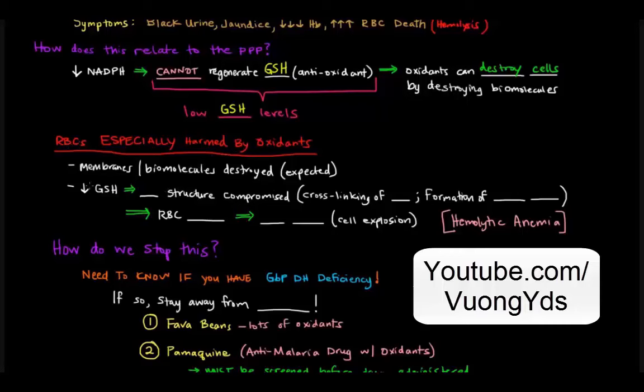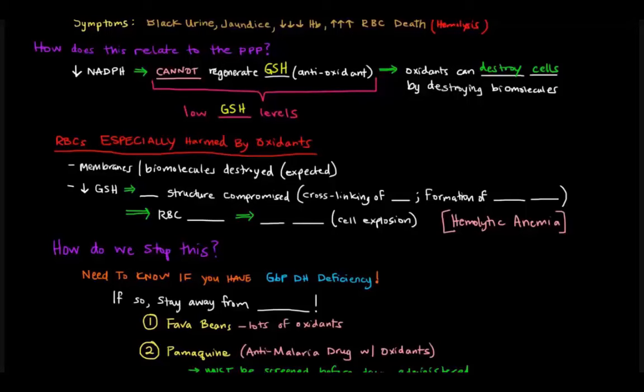But further than that, with red blood cells, low GSH levels compromise the structure of hemoglobin. So hemoglobin actually depends on GSH to some extent to keep its structure intact. And when there's low levels of GSH, the structure of hemoglobin is compromised.